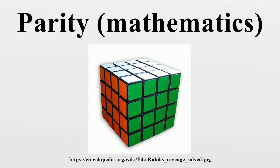Multiplication rules: even × even = even; even × odd = even; odd × odd = odd. The structure is in fact a field with just two elements. For division, the division of two whole numbers does not necessarily result in a whole number — for example, 1 ÷ 4 = 1/4, which is neither even nor odd. But where the quotient is an integer, it will be even if and only if the dividend has more factors of two than the divisor.